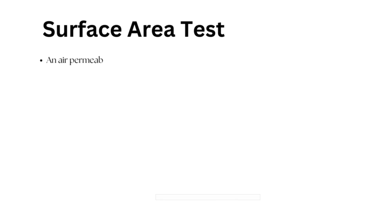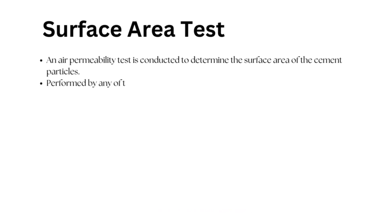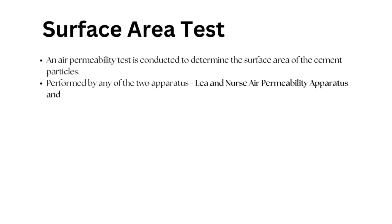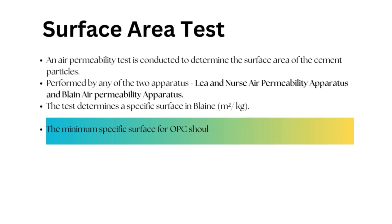Surface Area Test: An air permeability test is conducted to determine the surface area of the cement particles. The finer the cement particles, the more the surface area. The surface area of cement is determined by the Lea and Nurse air permeability apparatus and the Blaine air permeability apparatus. The test determines a specific surface in square meters per kilogram. The minimum specific surface for OPC should not be less than 2,250 square centimeters per kilogram.